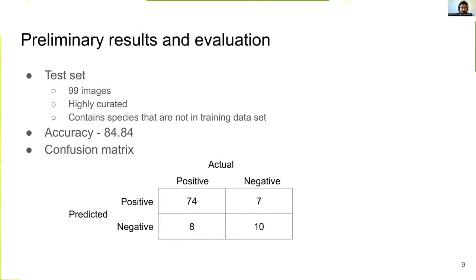After fine-tuning, we tested our model with the test set that is independent of the training dataset. Our test set contains 99 images which were highly curated and contains species that are not available in the training dataset. The accuracy of our model with the test set is 84.84%.